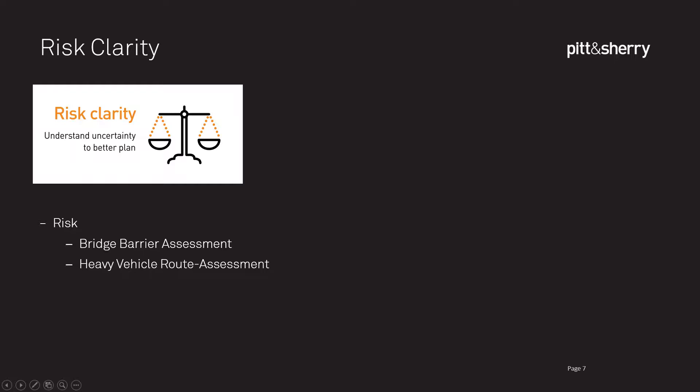Some other examples of the intellect we've put into the system come under our risk clarity banner. We have a bridge barrier assessment module. There are a lot of bridges in Australia that don't have sufficient barriers either side to protect cars from going off the edge — this can be a very serious safety issue, and there have been deaths associated with this. Asset owners may not always know what height of barrier is required or how to calculate it. In AssetAssist, all of that knowledge is in the software. Users can enter information gathered through an inspection, and AssetAssist will calculate what barriers the bridge needs, then compare those to the barriers currently there and show any discrepancy.